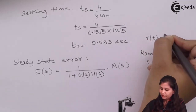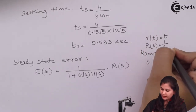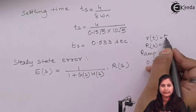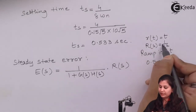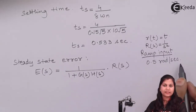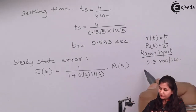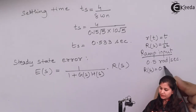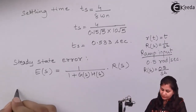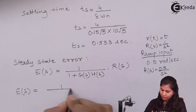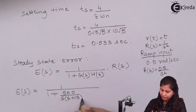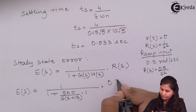For a ramp input r(t) equals t, the Laplace transform R(s) equals 1 upon s squared for a unit ramp. Since the ramp input has magnitude 0.5 radians per second, R(s) equals 0.5 upon s squared. Substituting into the error formula: E(s) equals [1 upon (1 plus 500/s(s+15))] times [0.5 upon s²].